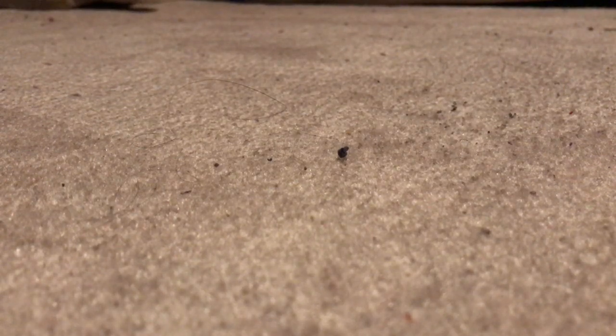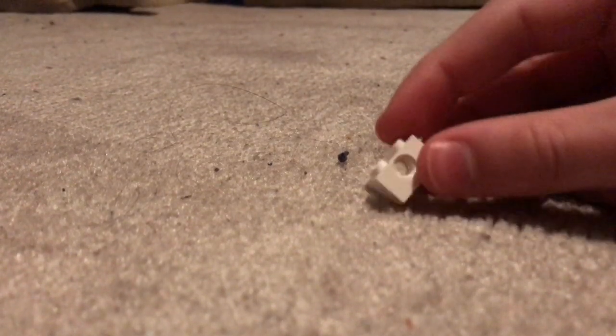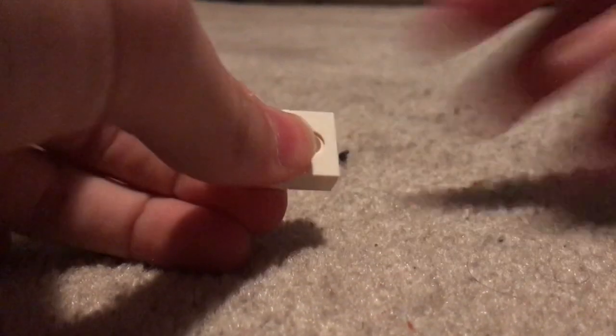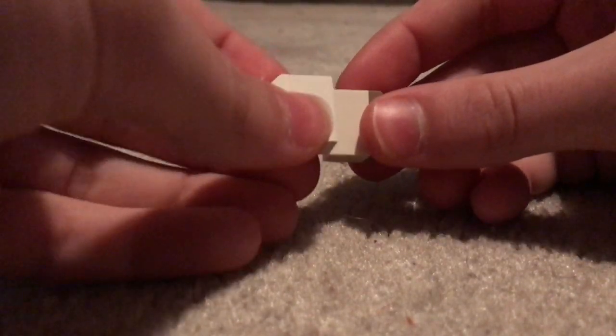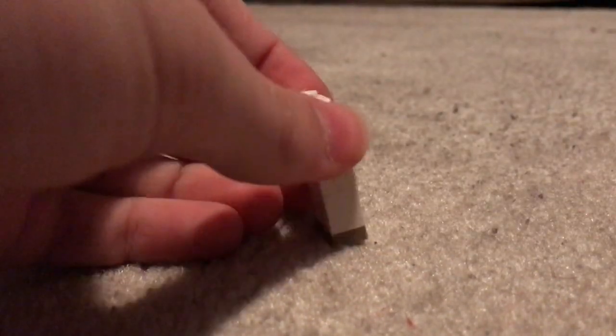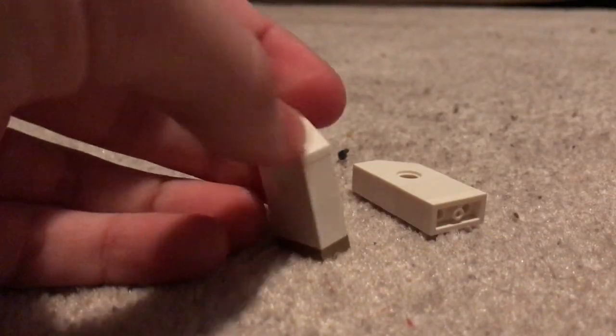And then now we're going to make the side parts of the weapon mount. Get a piece like this, connect this, get a piece like this, make sure it has, and then add another like stud under it so it's a little higher. Then attach it like that and then make another one the exact same.